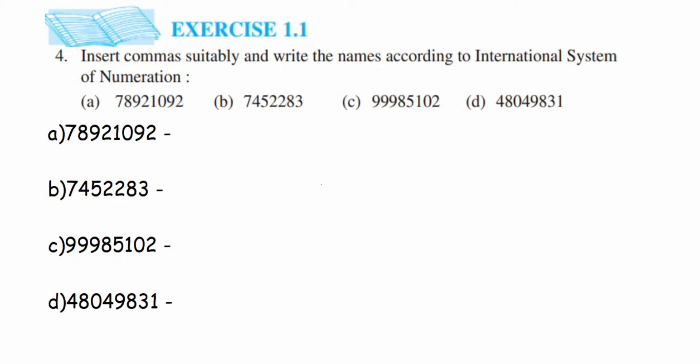The question says: insert commas and write the names according to the international system of numeration. We have two systems — one is international and one is the Indian system. In the international system, we put a comma after every three digits from the right-hand side.